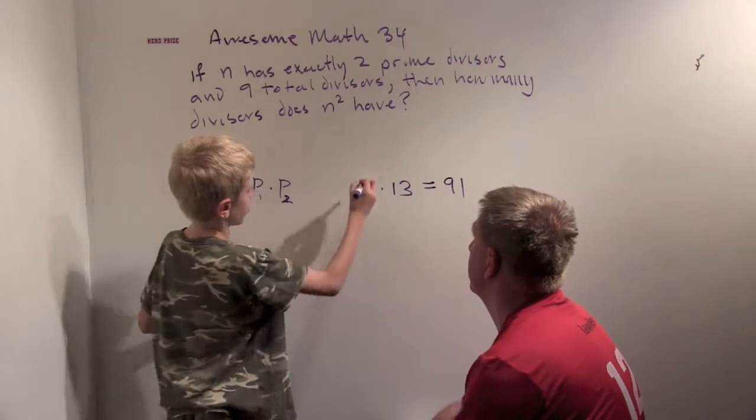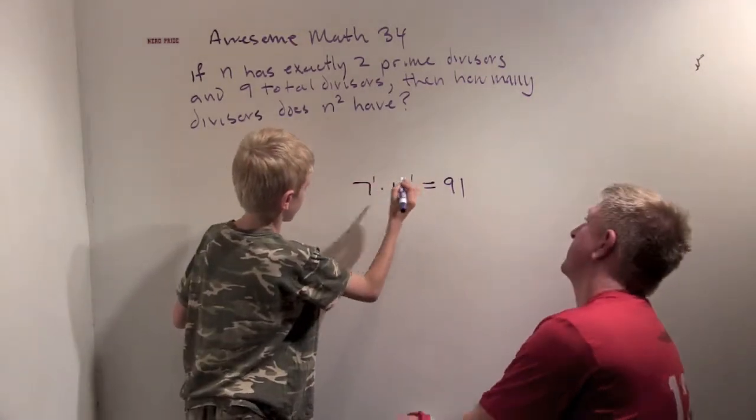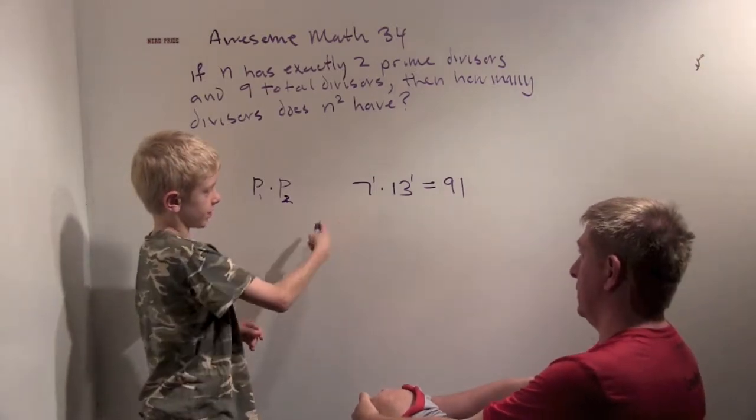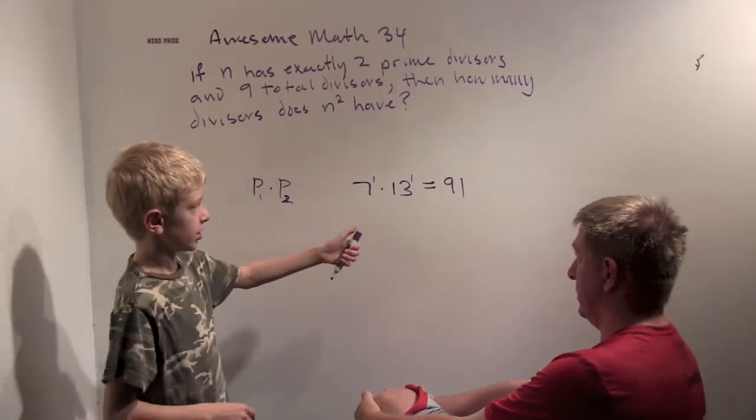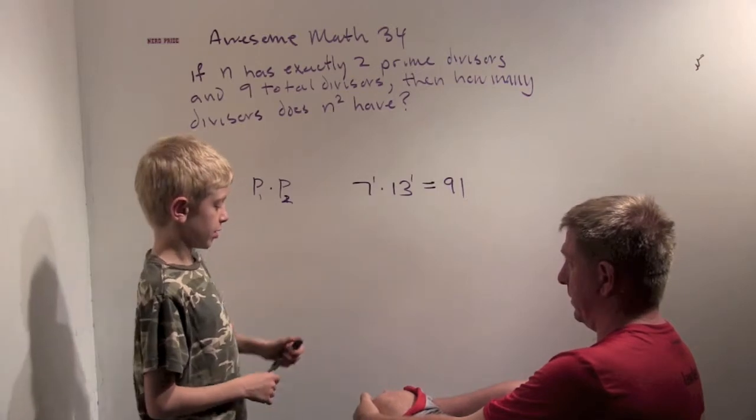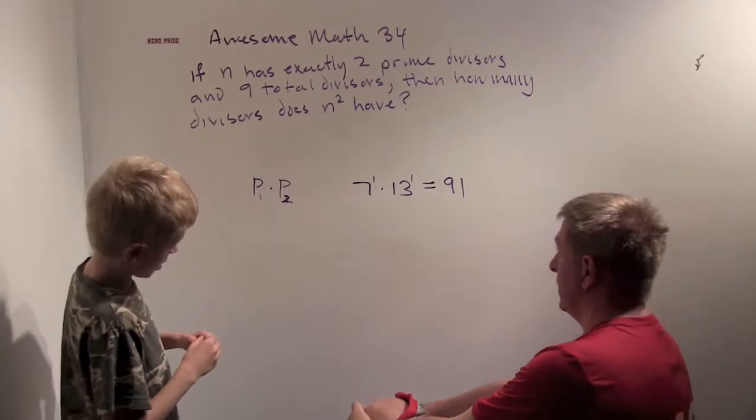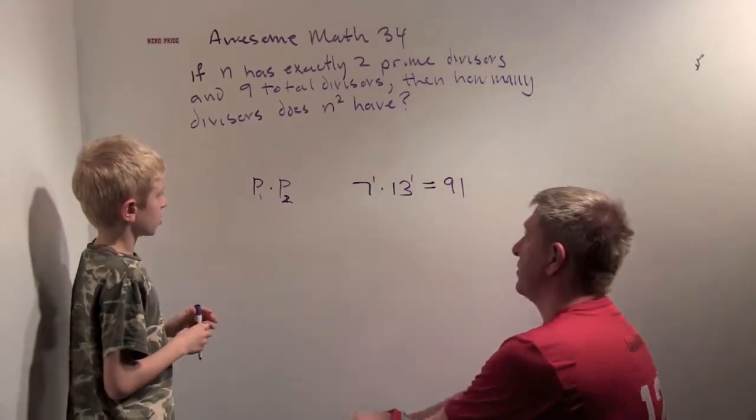No, because this is 7 to the 1 times 13 to the 1. And we have two choices for these 7s. We have 7 to the 0, 7 to the 1, 13 to the 0, 13 to the 1. So you have 4. This only has 4 divisors. We need to have 9.